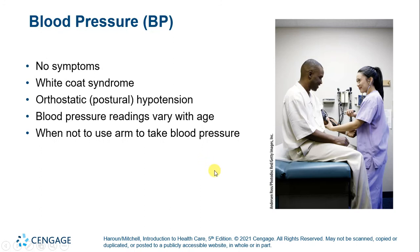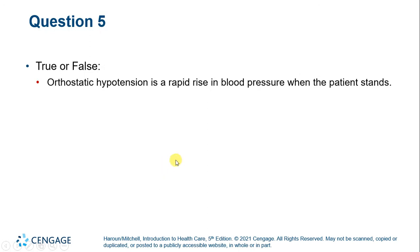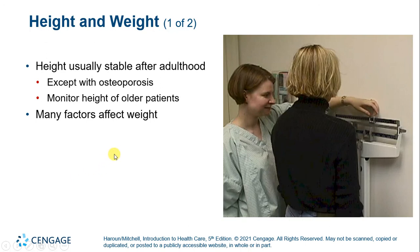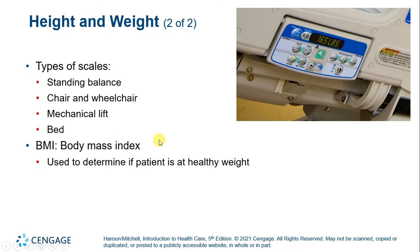Height and weight are also important vital measurements. Height is usually stable after adulthood but can drop with osteoporosis, so it is monitored in older patients. Many factors affect weight, and there are different types of scales to familiarize yourself with. BMI is not perfect by any means, but we do use it in healthcare. One problem is that people who are muscular or large-boned have a higher BMI, but this does not mean they have a higher health risk.